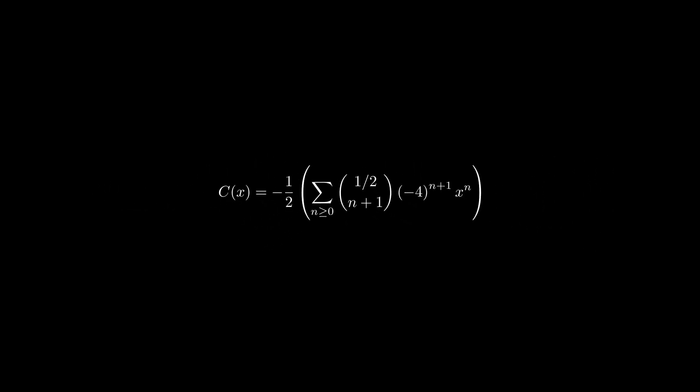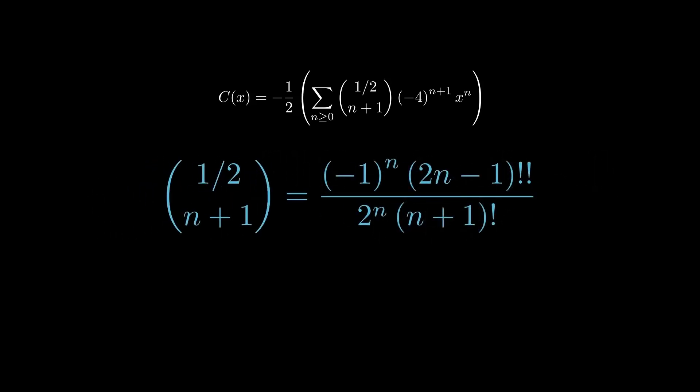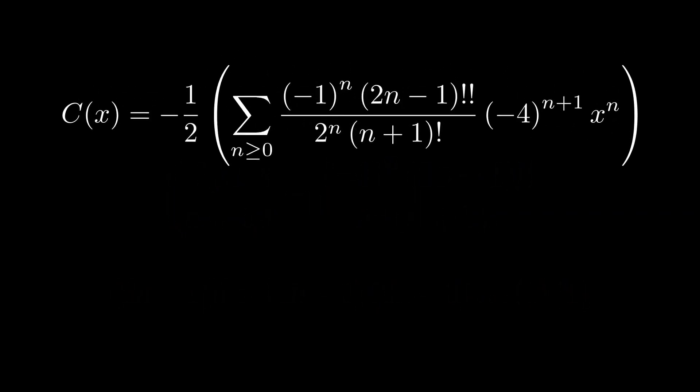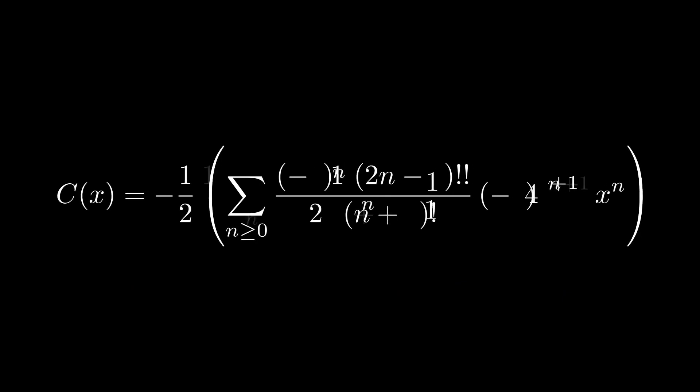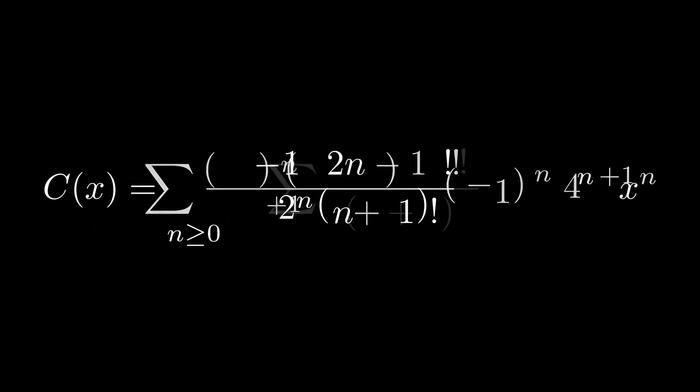By definition of the generalized binomial coefficient, you can check that 1 half choose n plus 1 simplifies to this, where the double exclamation mark denotes the double factorial, defined as follows. Plugging this in the series gives us the following. Now, by simplifying the exponents along the minus 1 half outside the series, we get this.